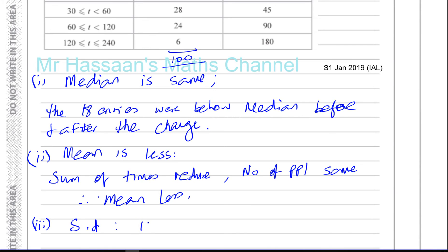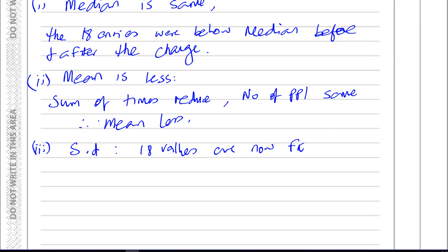So you can say that the 18 values, the 18 values which have changed, the 18 values are now further from the mean value. Therefore the spread of data has increased. Therefore the standard deviation is going to increase. So our median doesn't change, our mean gets less, and our standard deviation increases.